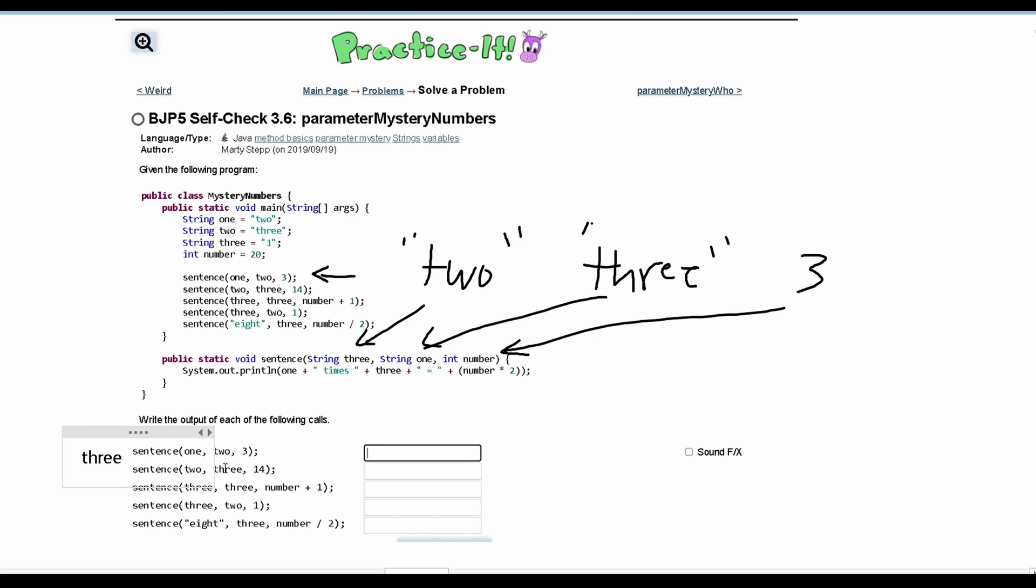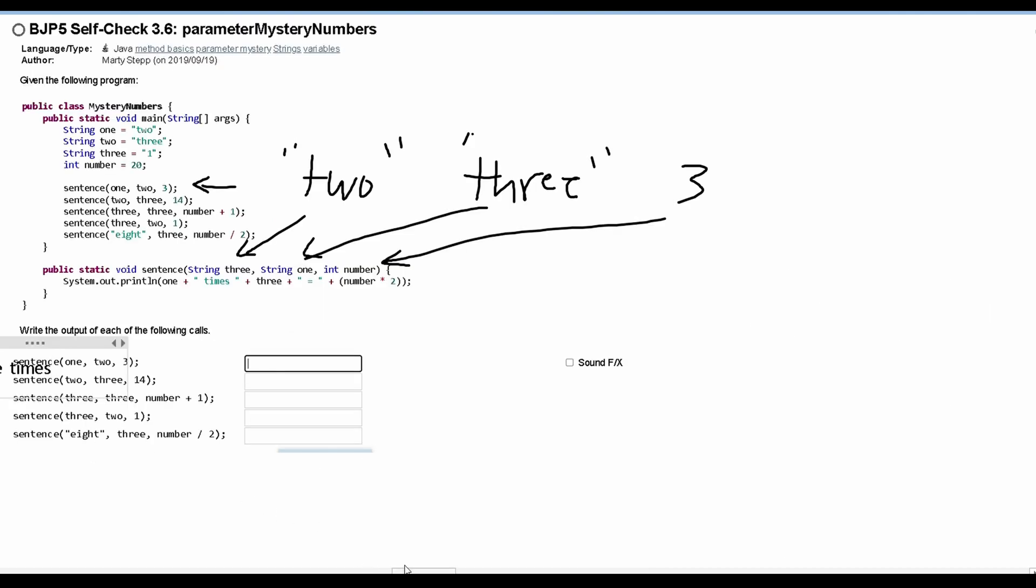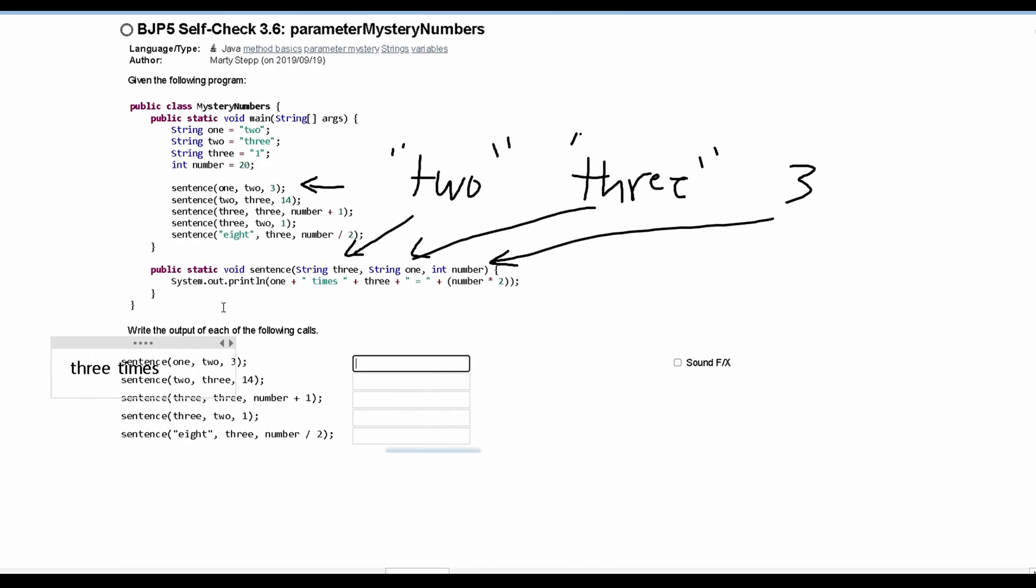Then we are going to have the string times, this should be lowercase, and then we will have 3 right here. And 3 stores 2, so we will have the string 2. Then we will have an equal sign, and then we will have number times 2. And number is 3, so we will have 6. And this is going to be our first line of output. This will be the first thing that we put right here.